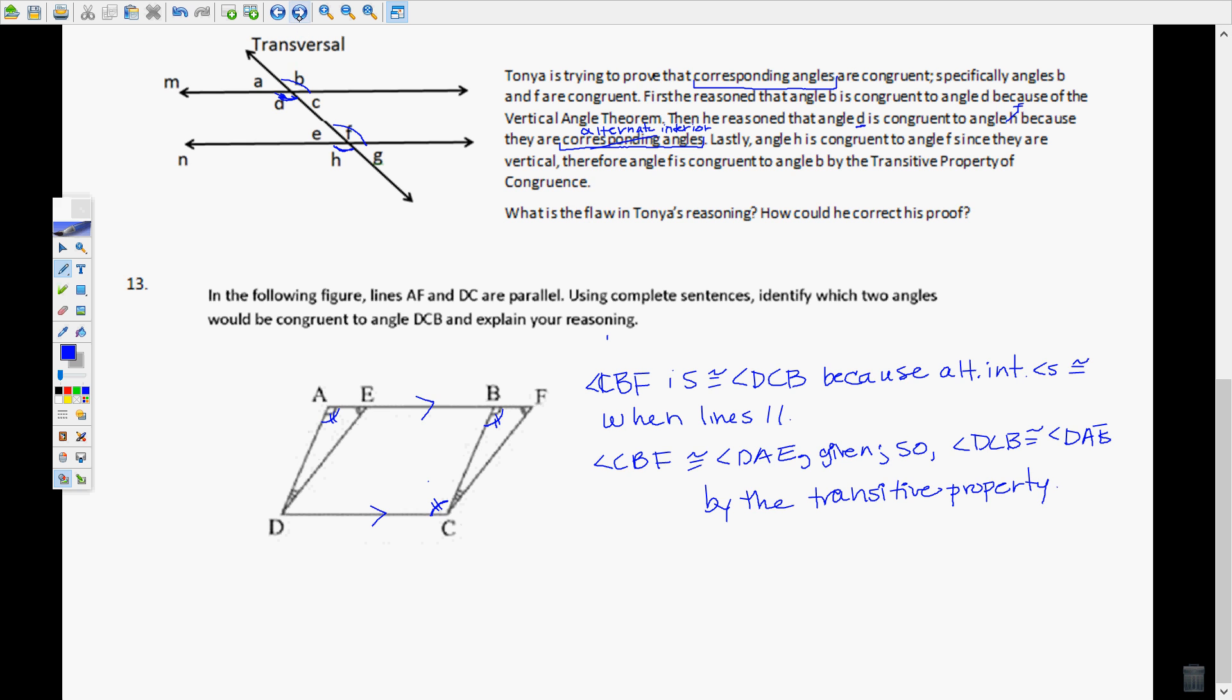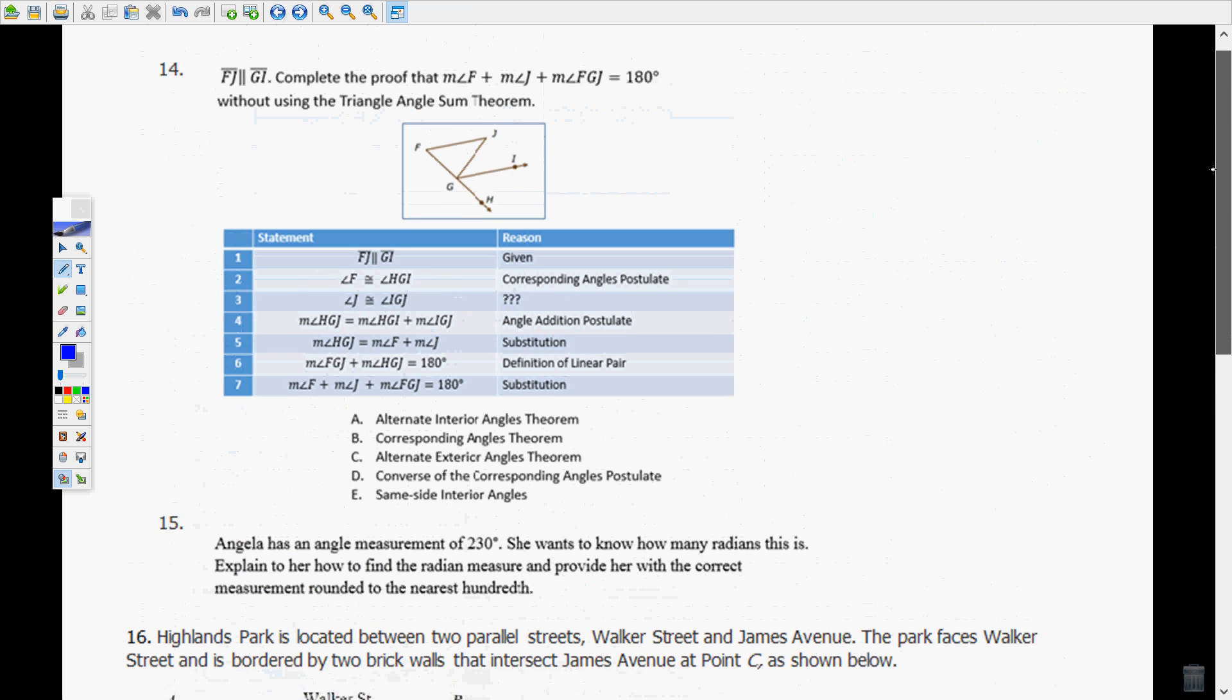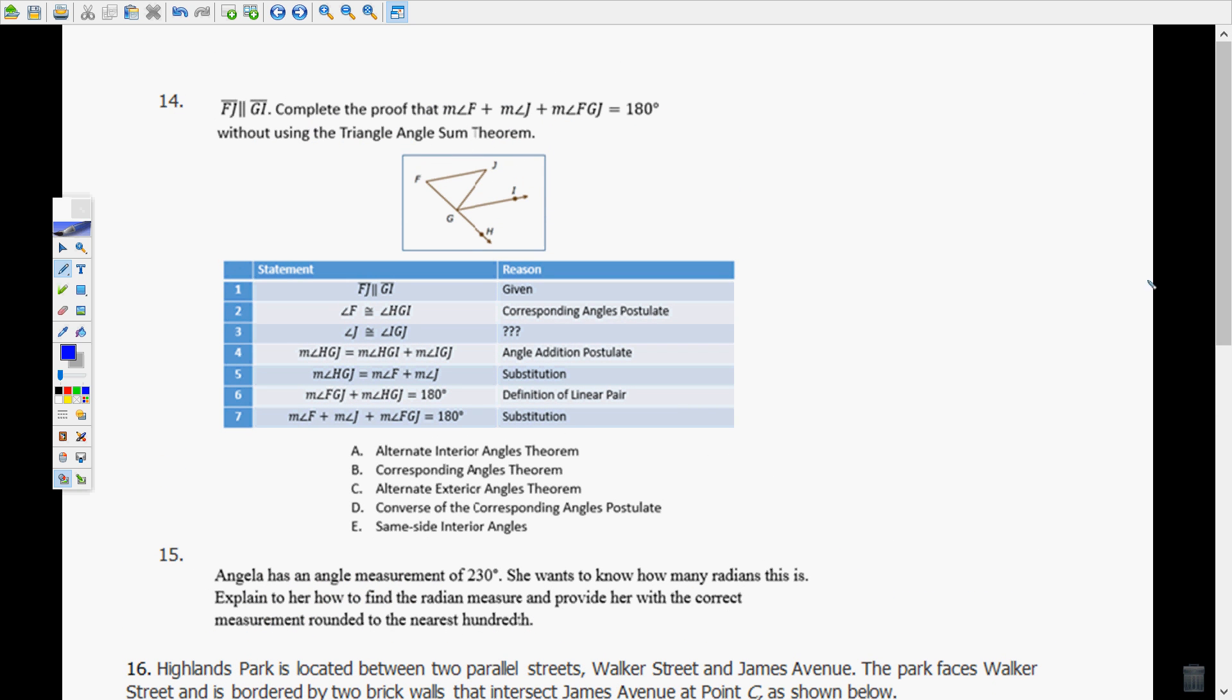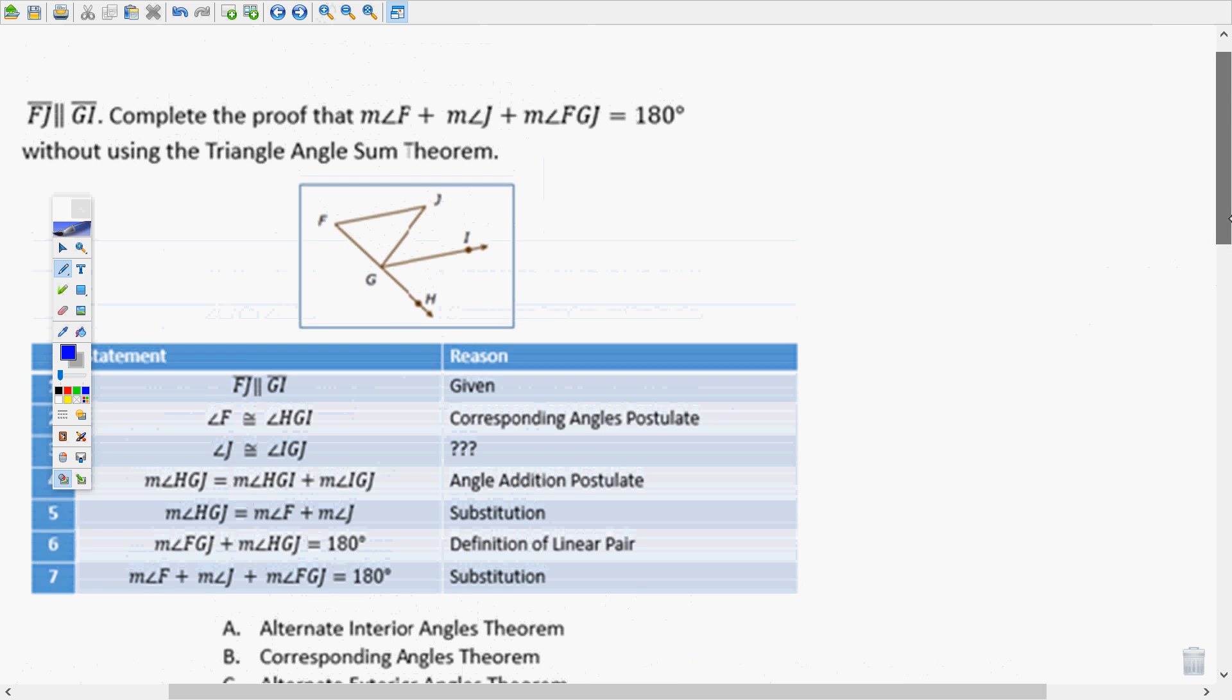Next page, number 14. Segment FJ is parallel to segment GI. Make it a little bigger so we can see what we're doing here.